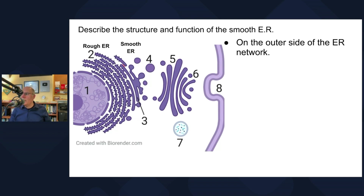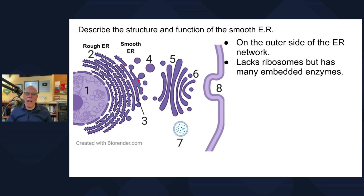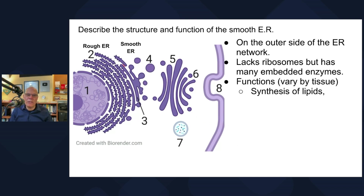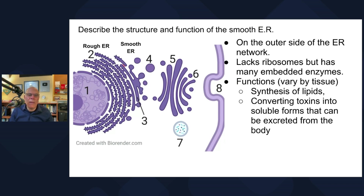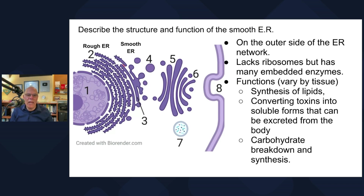The smooth ER is on the outer side of the ER network. It lacks ribosomes but still has many embedded enzymes. Its functions vary by tissue and can include synthesis of lipids, converting toxins into soluble forms that can be excreted from the body, and carbohydrate breakdown and synthesis.